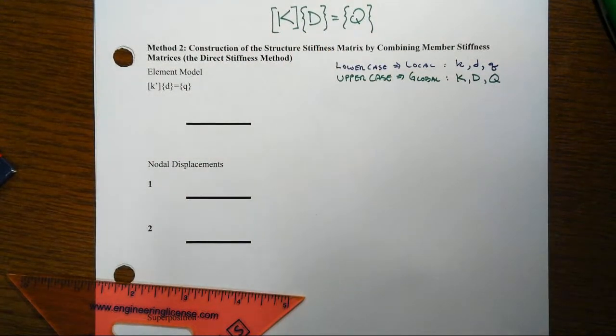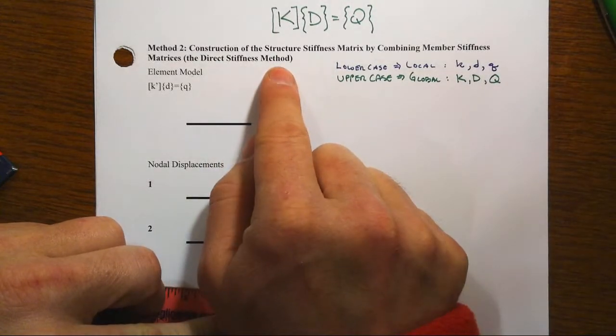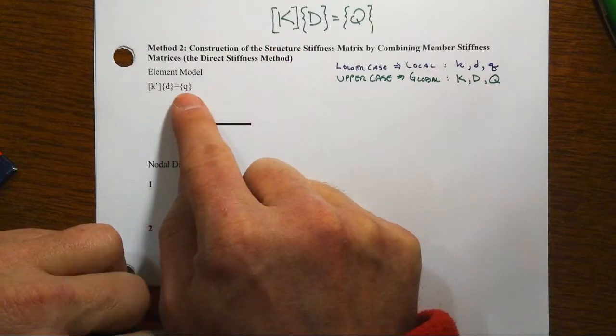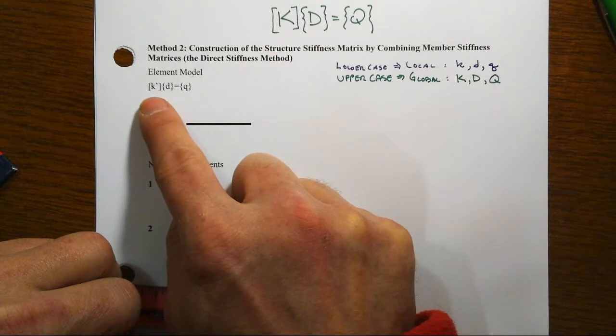Now, in method one, we used the imposition of nodal displacements in the particular pattern to create this structure stiffness matrix. In the direct stiffness method, we're going to assemble this directly by looking at element structures or element stiffness matrices.